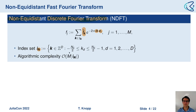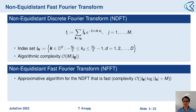The components run from minus one-half to one-half, and n is essentially the number of Fourier coefficients. The algorithmic complexity of the NDFT implemented naively is M times the absolute value of I_N, which is basically quadratic cost. Because this is too expensive in many applications, the non-equidistant fast Fourier transform — short NFFT — was developed in the 1990s. It is an approximative algorithm that allows executing the NDFT in just n log n plus an initial M factor.